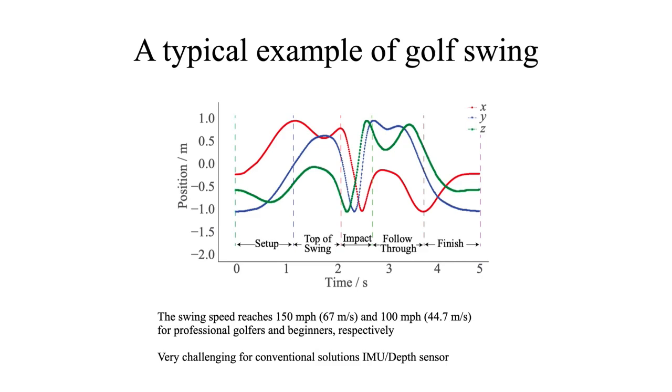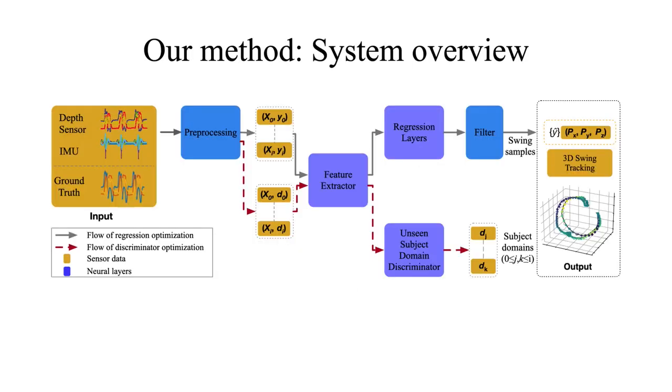Conventional solutions only rely on IMU or depth sensor. Simply because IMU is notorious for its accumulated error, while the depth sensor is usually occluded in many stages in golf swing, for example, usually occluded at top of swing and follow through. So we propose a method using sensor fusion of these two sensors and tailor a deep neural network to learn their representation and relationship so that we could recover accurate swing tracking.